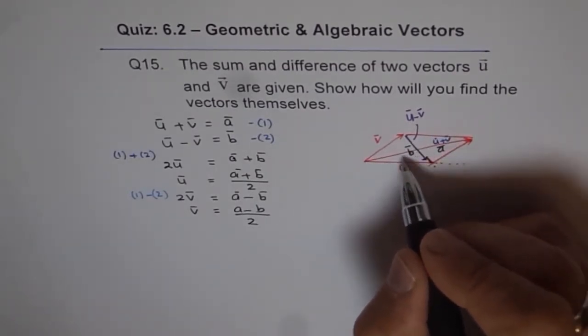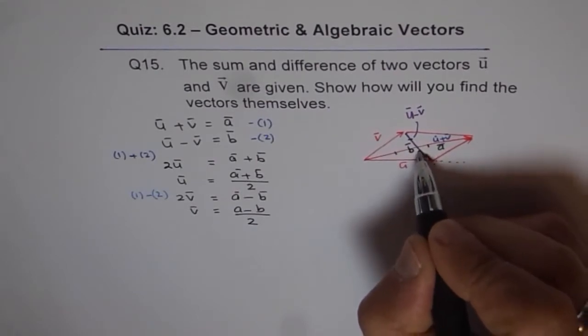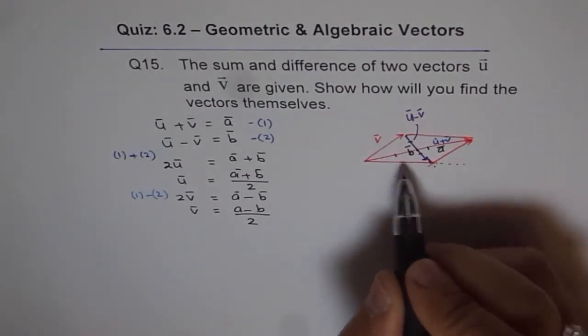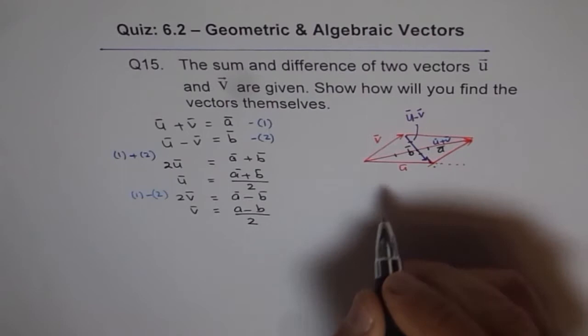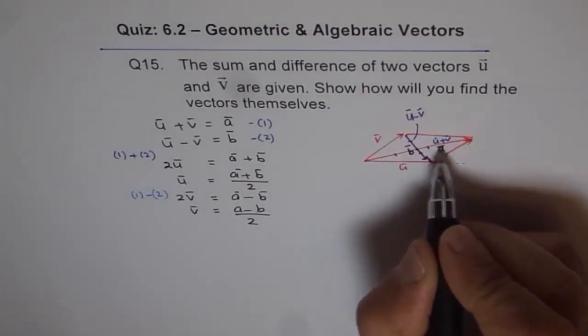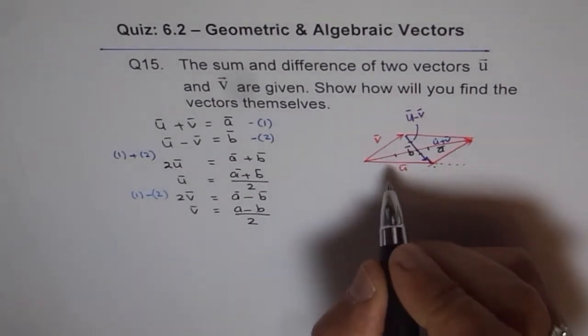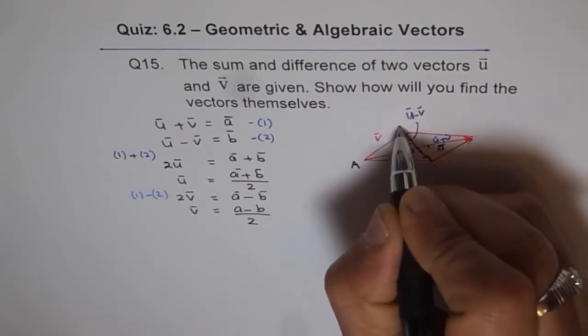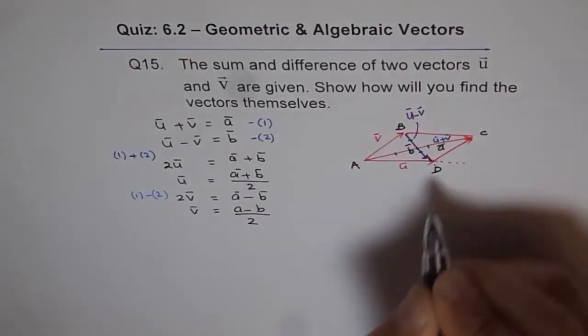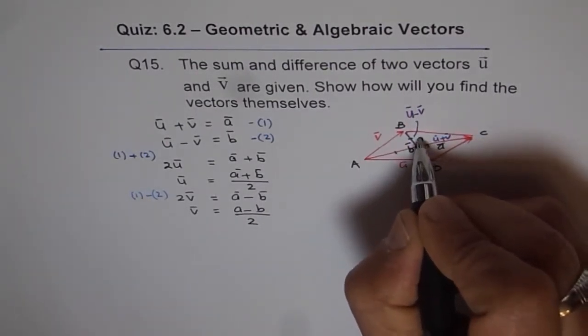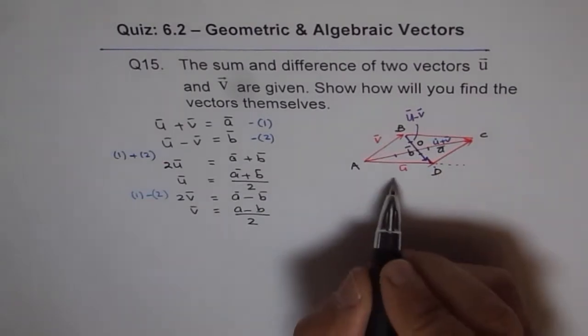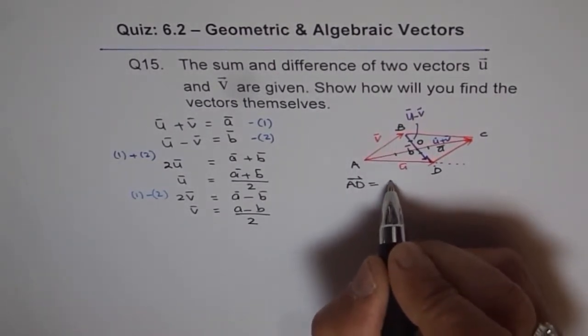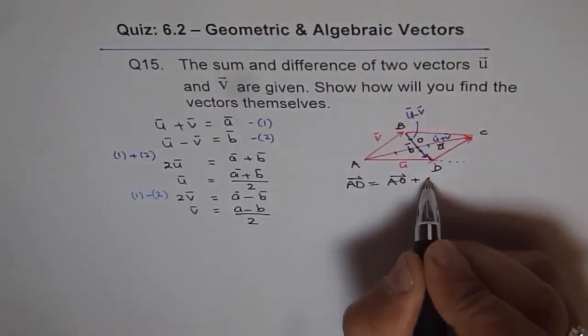We know that these diagonals will bisect. This is always a midpoint. So you can write u in terms of these vectors. So u could be written as, let me just name it first. It will become simpler. So let's say a, b, c, d. Let me call it like this, and midpoint let us say o. In that case, we can write the vector a d is equal to vector a o plus o d. Now vector a d is u. And a o is half of u plus v, that is half of a.